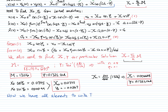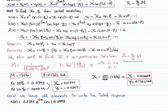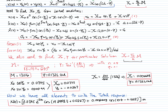Now we have all the elements to write our total response. The total response equals 0.0345 e to the negative 2t, cosine of 19.8997t plus 0.0267, plus 0.06608 cosine of 10t minus 0.1325. This is our total solution and the answer for this problem. Let me graph these expressions so you can see how they look.